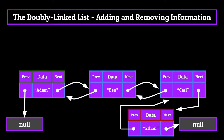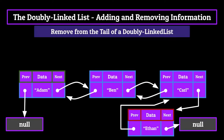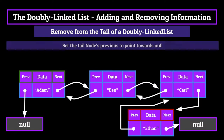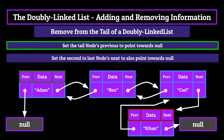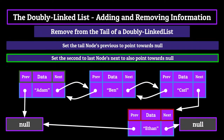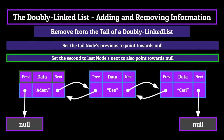Just as fast as he was added, ethan is going to be removed. Removing from the tail only requires two steps. First, we set the tail node's previous to point towards null. Then we set the second-to-last node's next to also point towards null. So we set the ethan node's previous to null, then set the carl node's next to null. This deletes the ethan node from the list and makes the carl node, once again, the tail.